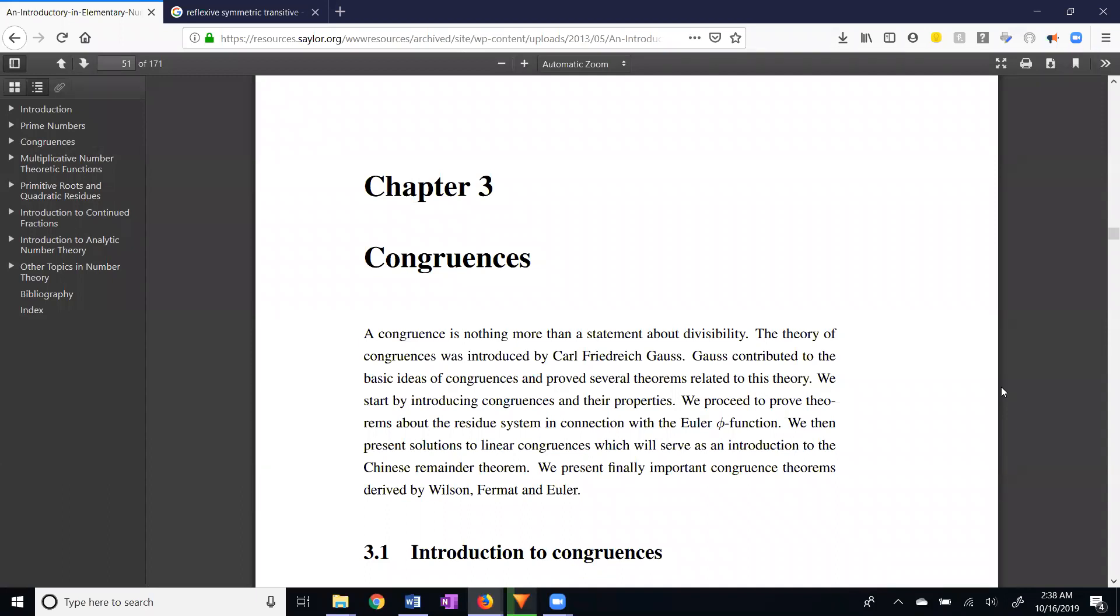This term congruence in number theory is used to show that two numbers are going to be congruent mod some integer. This is different than the term congruent in geometry where you might have angles that are congruent or triangles that are congruent. A lot of the properties are the same.